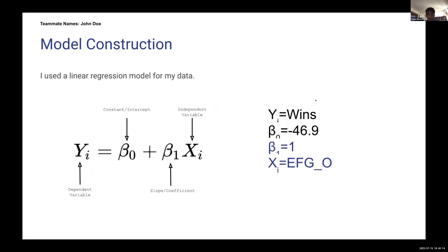So for my model construct, my intercept ended up being negative 46.9 and then my slope ended up being one when I ran the model through the code.